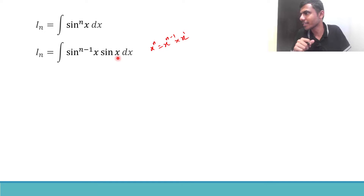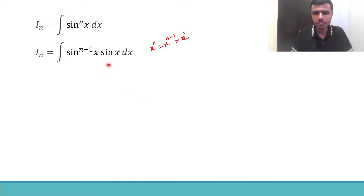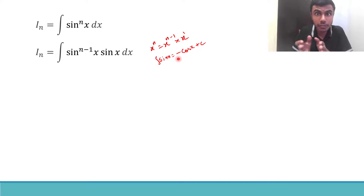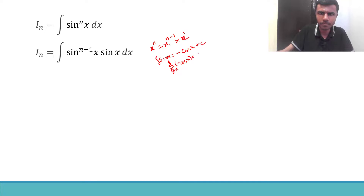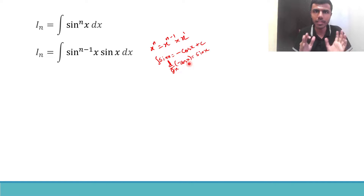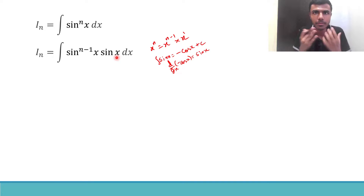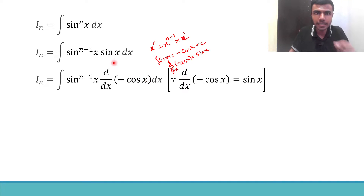Now, what is the integration of sin x? It is −cos x. So the derivative of −cos x is sin x. This means that in place of sin x I can write the derivative of −cos x. I'm going to write this sin x as the derivative of −cos x — you will understand why later. The dx remains as it is.